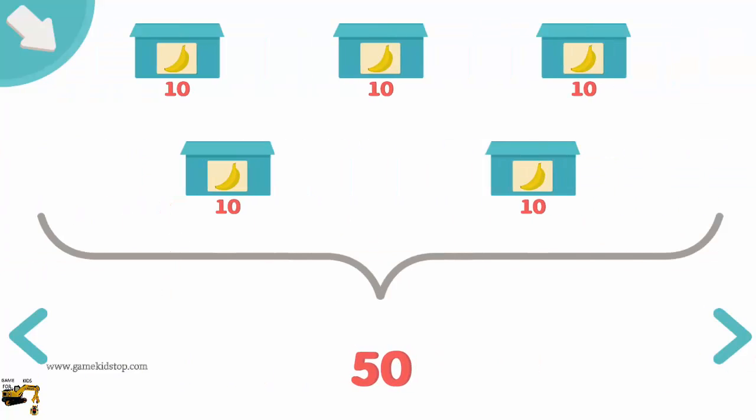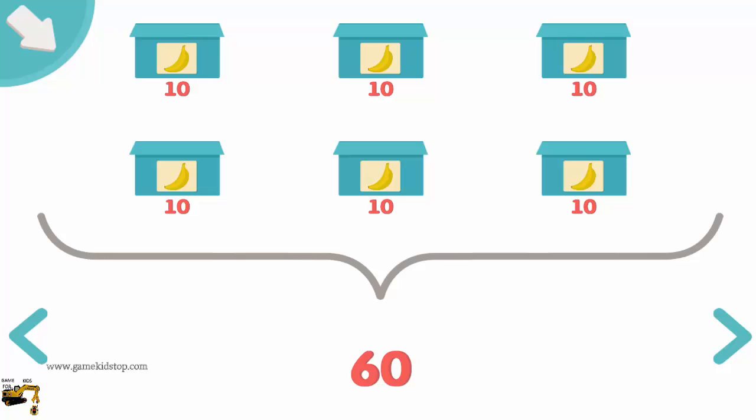This is the number 50. The number 50 is made up of two digits. The first digit shows the number of 10s and the second digit the number of units. In the number 50 there are five 10s. So 5 times 10 is 50. This is the number 60. The number 60 is made up of two digits. The first digit shows the number of 10s and the second digit the number of units. In the number 60 there are six 10s. So 6 times 10 is 60.